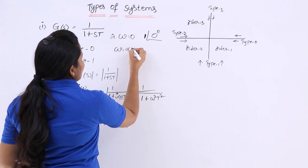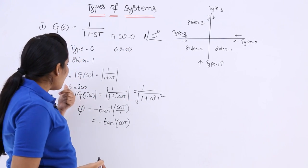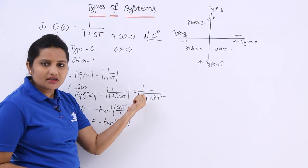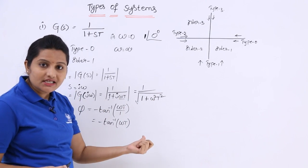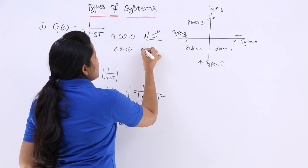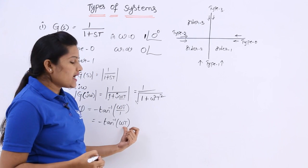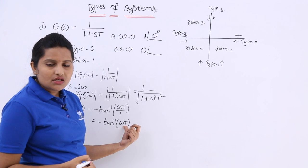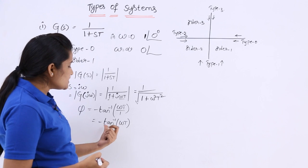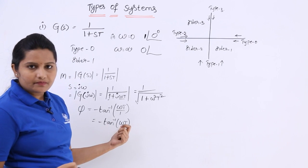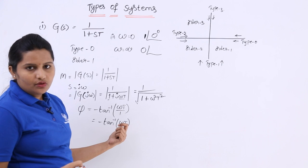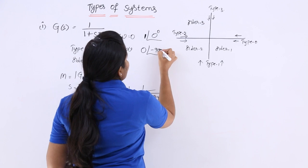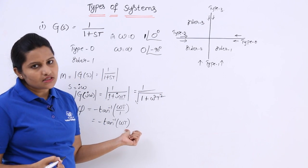When ω = infinity: the magnitude becomes 1/√(1+∞) = 0. The phase angle is −tan⁻¹(∞) = −90 degrees, since tan(90°) = ∞. So the plot ends at magnitude 0 with a phase angle of −90 degrees.